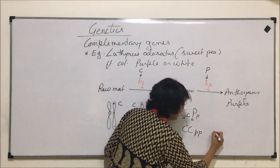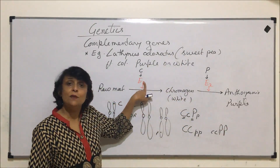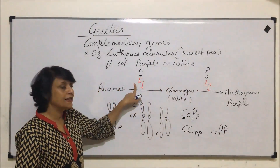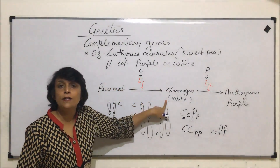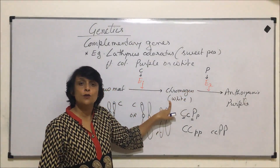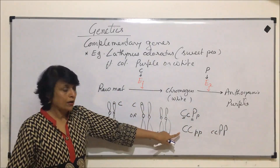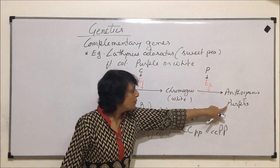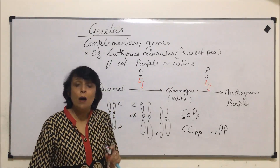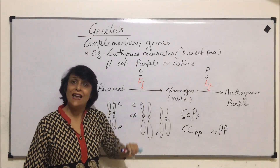In another situation where C is recessive and P's are dominant, enzyme two is present but enzyme one is not synthesized. Without enzyme one, the raw material cannot be converted into chromogen, and without chromogen there is no substrate for enzyme two. So if either C or P is absent in dominant form, purple color formation will not take place — these two genes work complementary to each other.